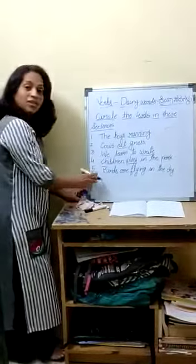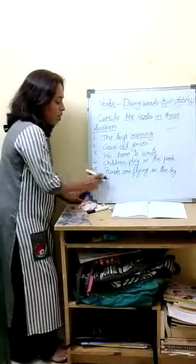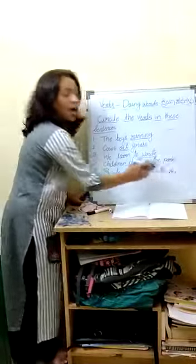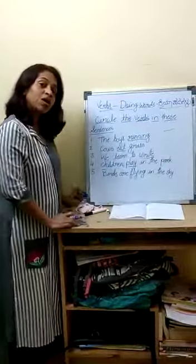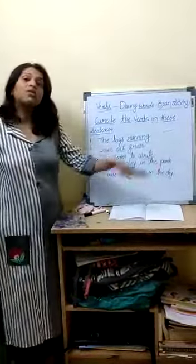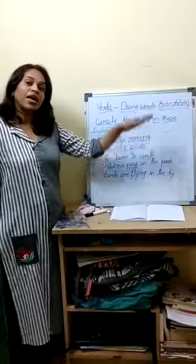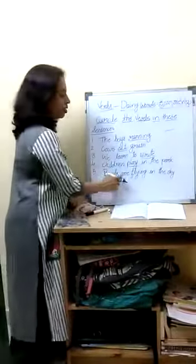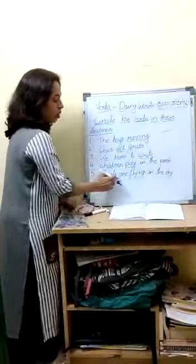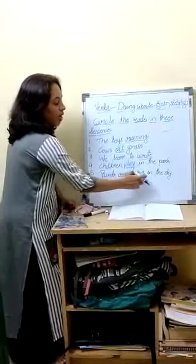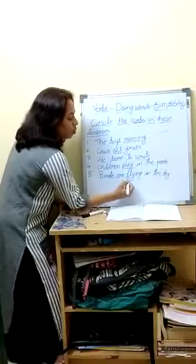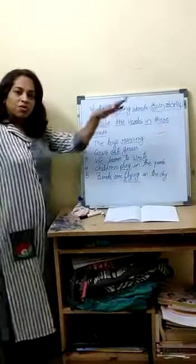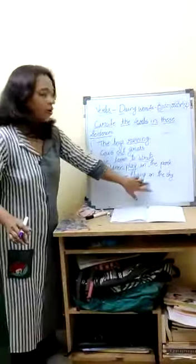It is the last sentence. Birds are flying in the sky — what the birds are doing? Birds are flying in the sky. So what is the verb here? Flying is the verb.